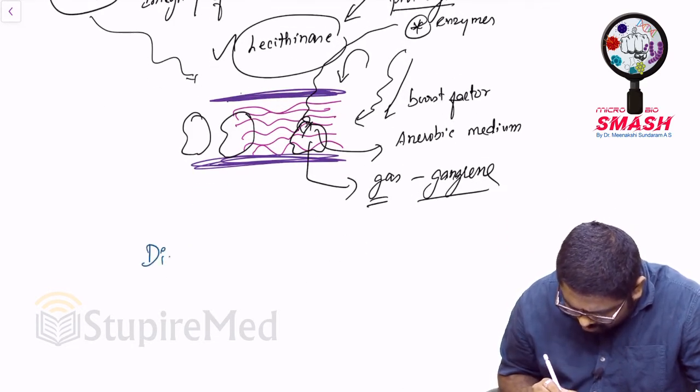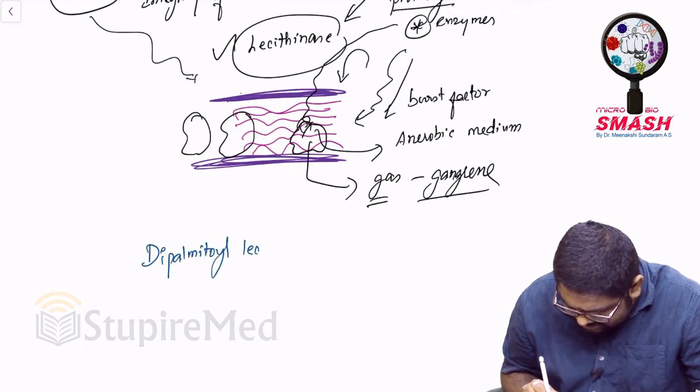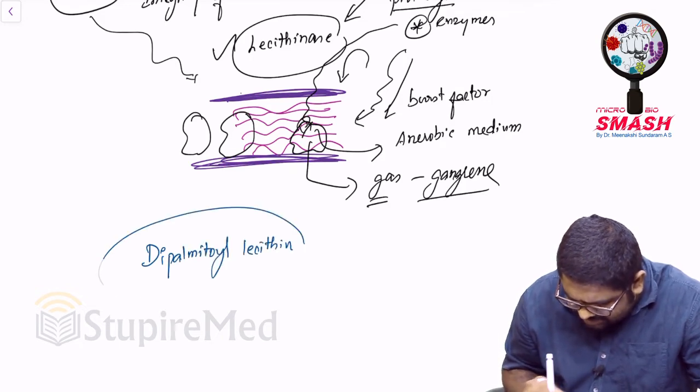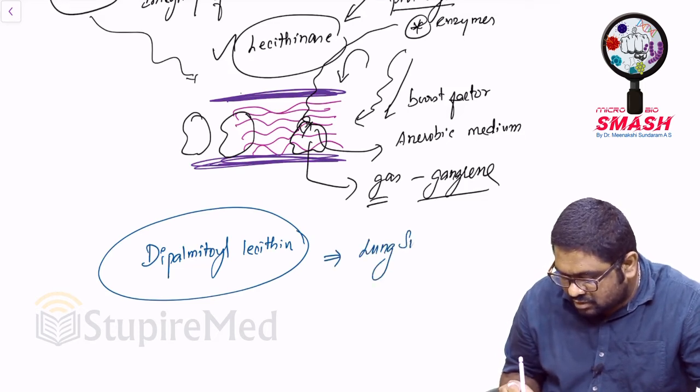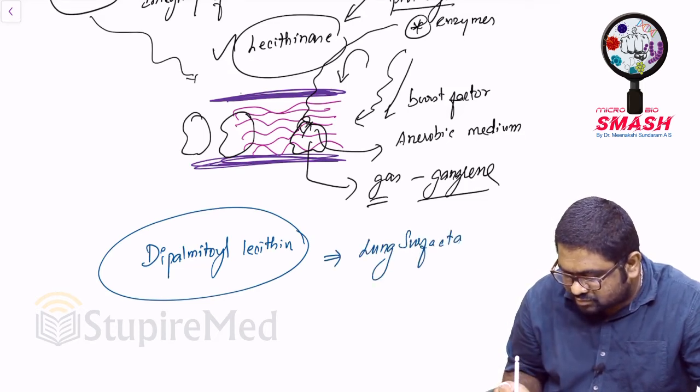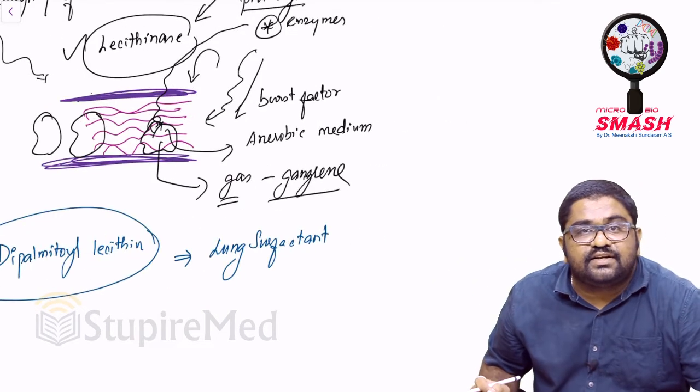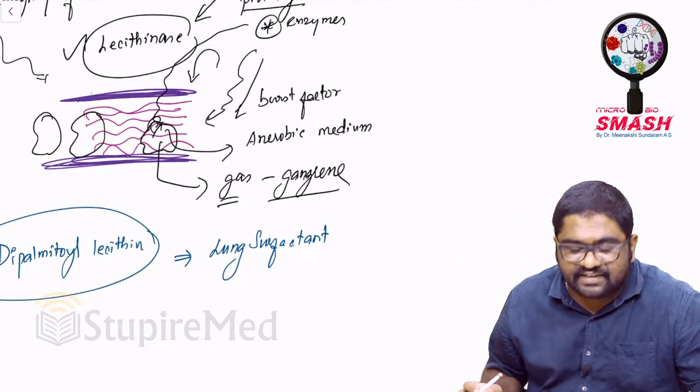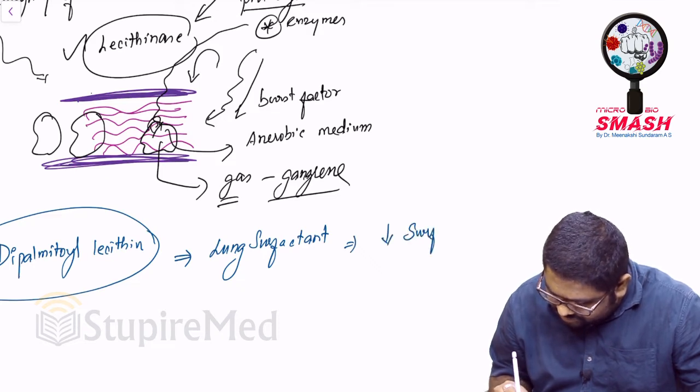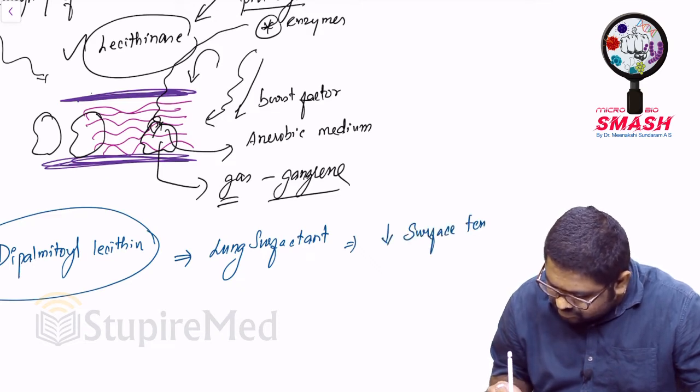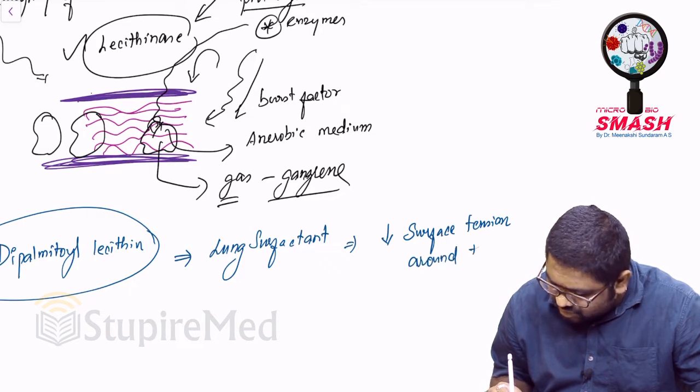Apart from that, what are the other functions of lecithin? Remember dipalmitoyl lecithin is the scientific name of lung surfactant. It decreases surface tension around the alveoli.